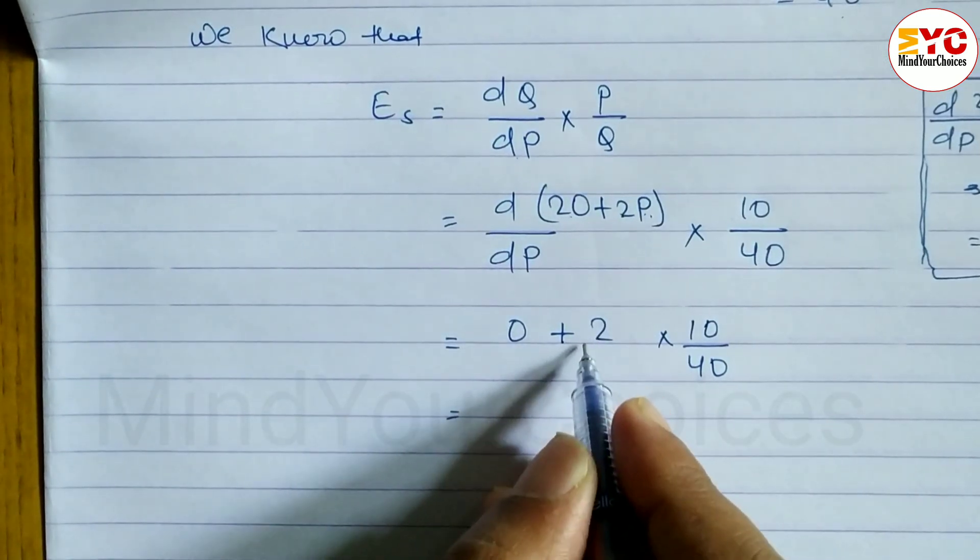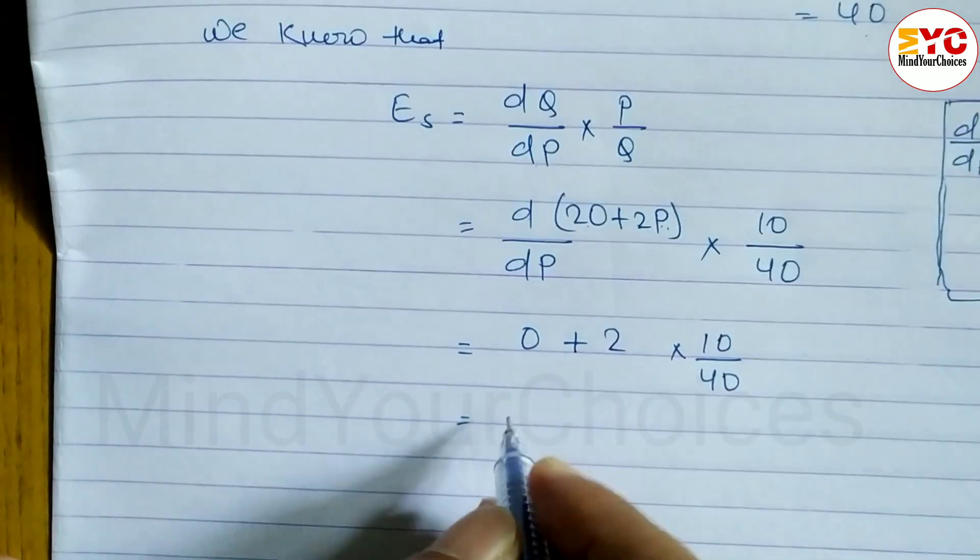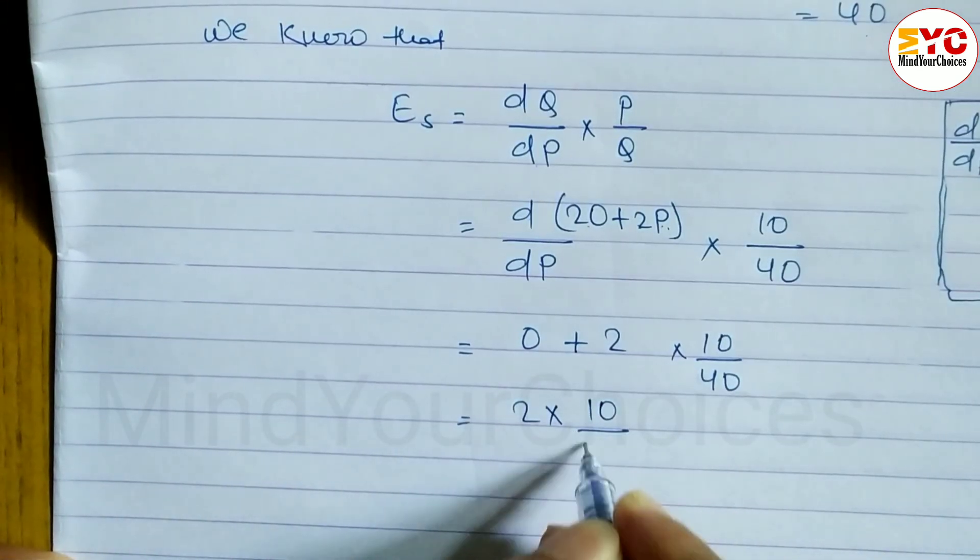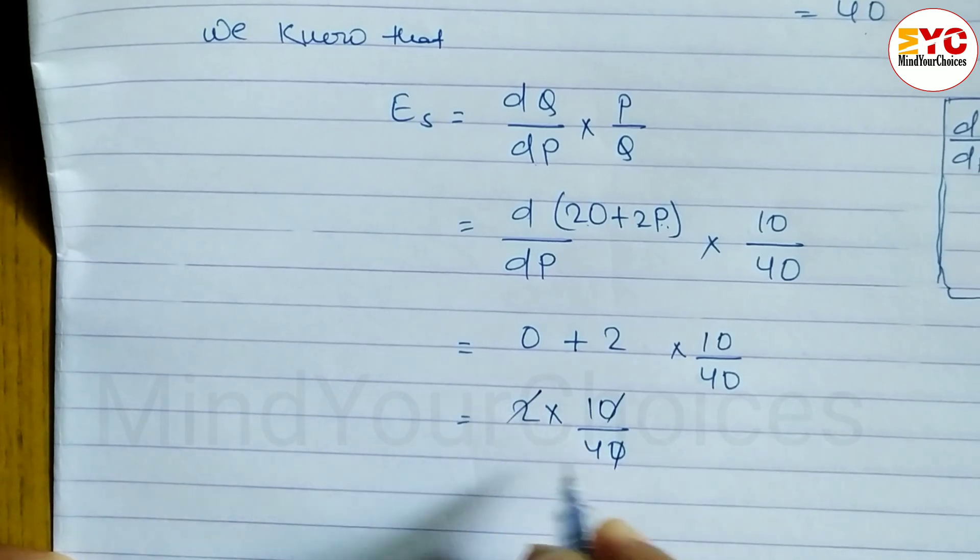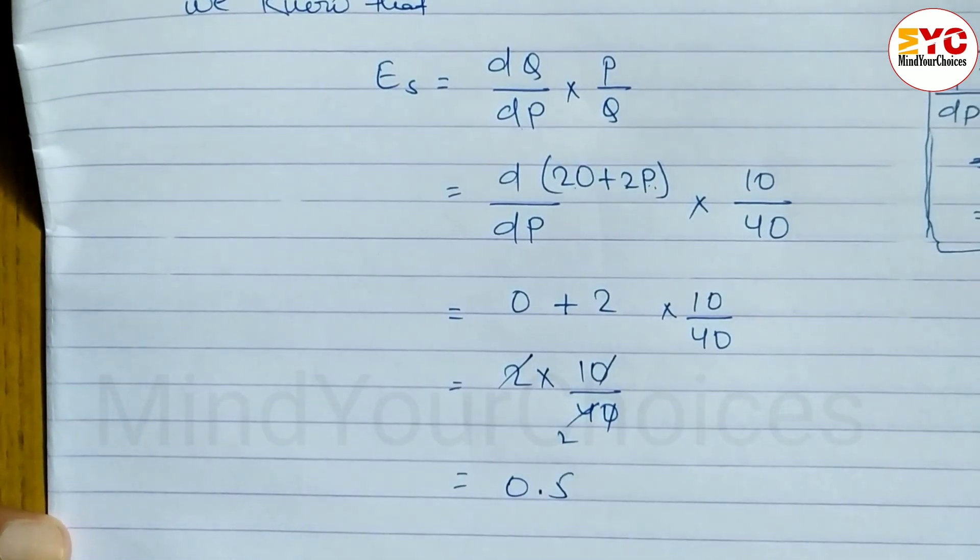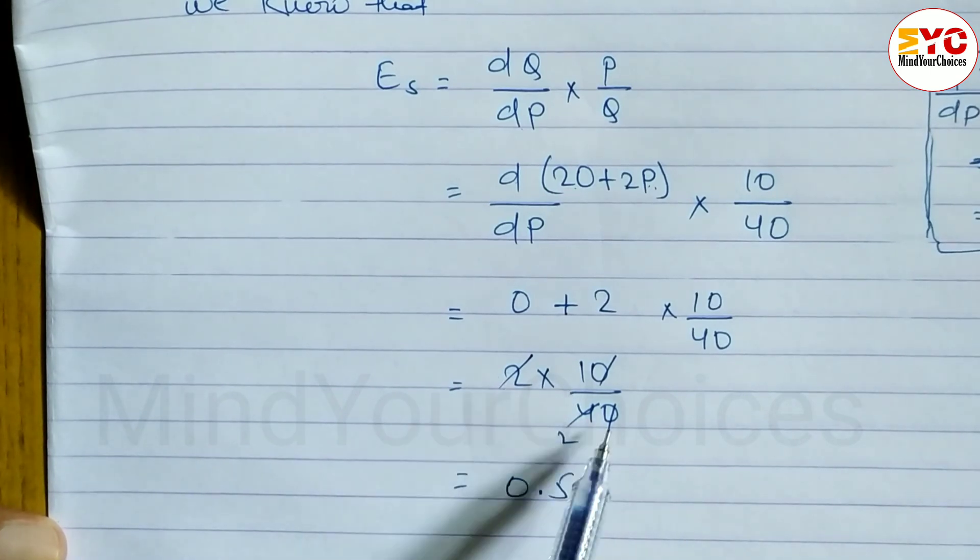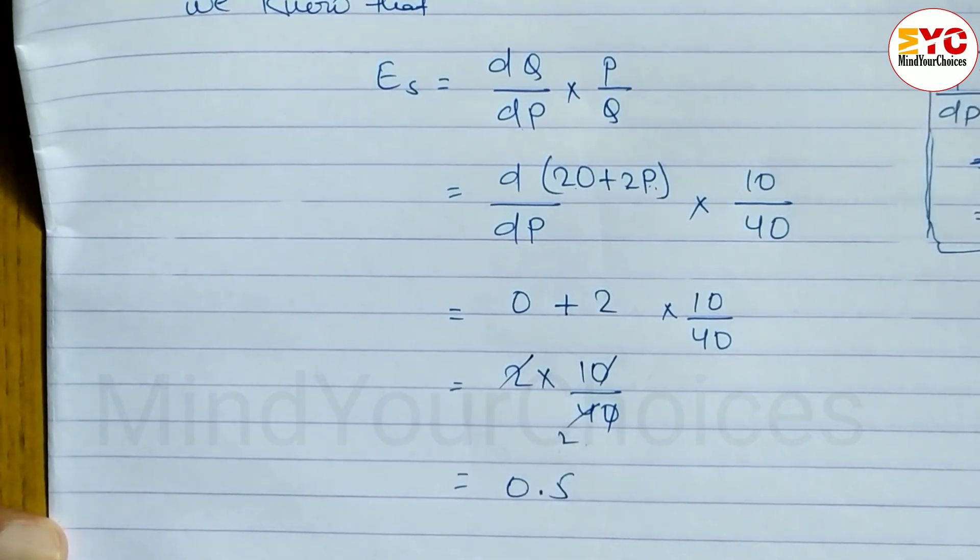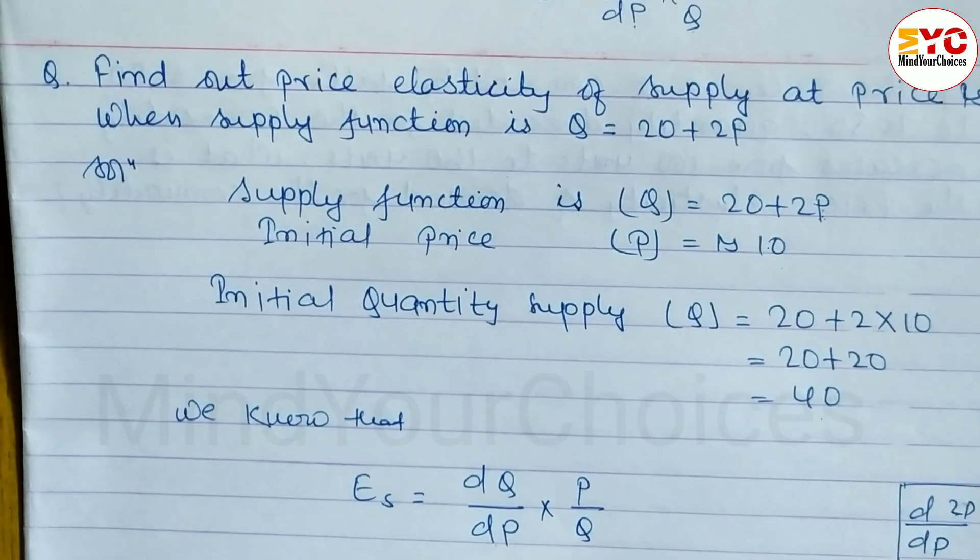0 plus 2 means 2 only, 2 into 10 by 40. Let's calculate, 0 is cancel, 2 is 4, 1 by 2, 1 by 2 means 0.5. Here we get 2, 2 is 4 and 1 by 2, 1 by 2 means 0.5. Hope you understand this question taken from elasticity of demand and supply.